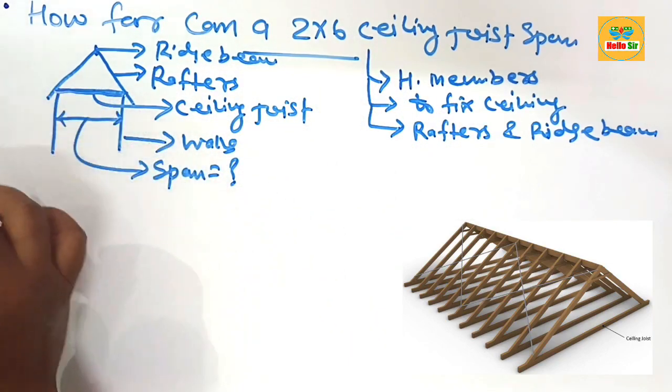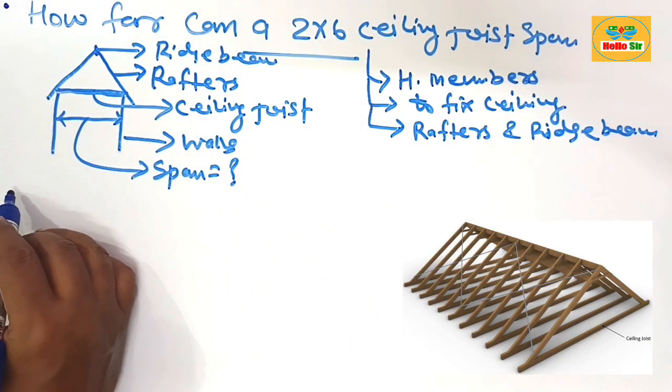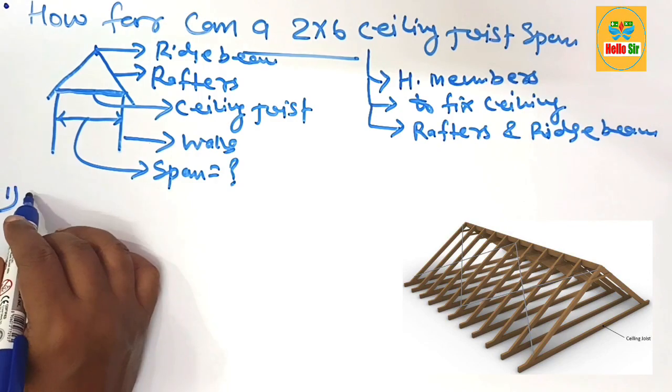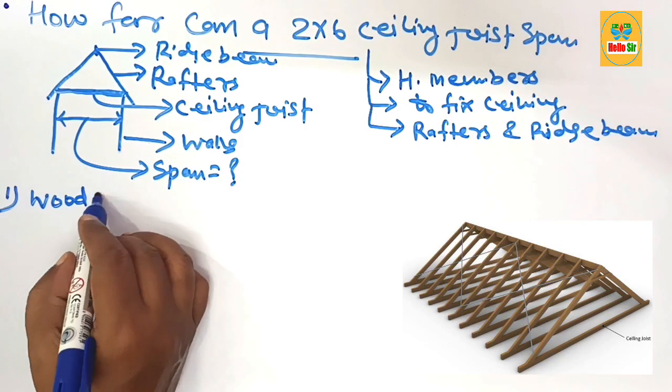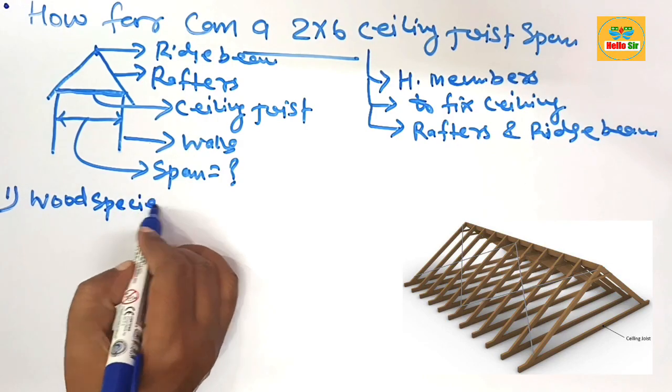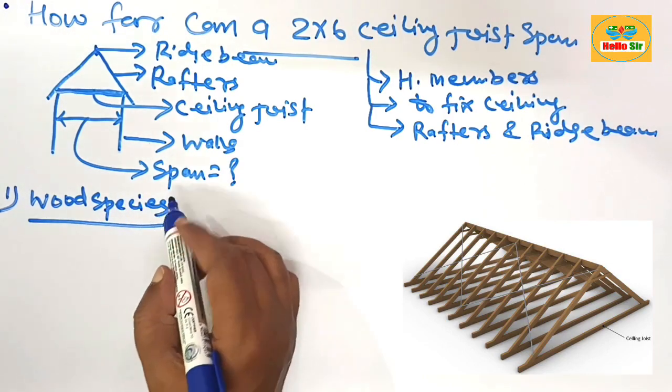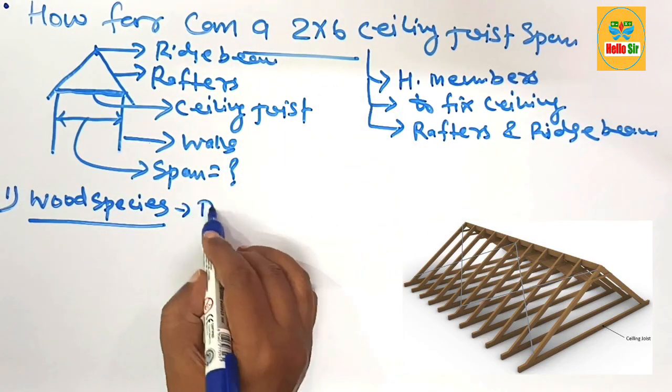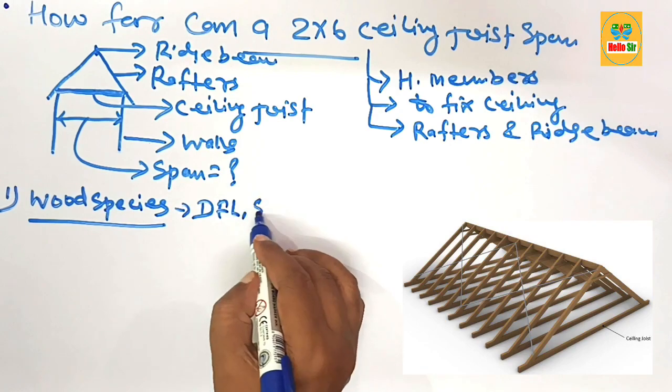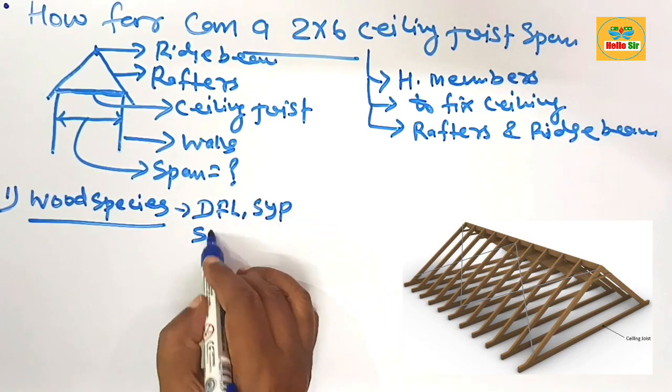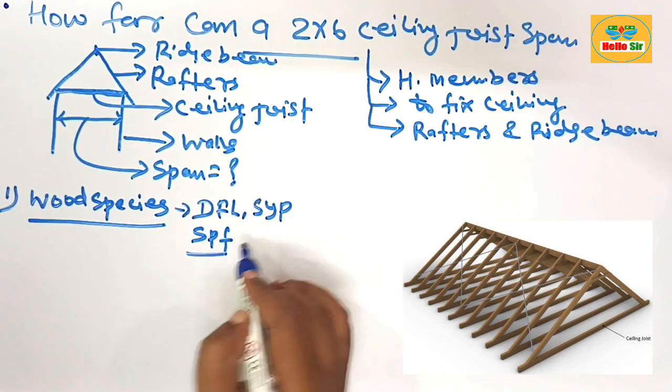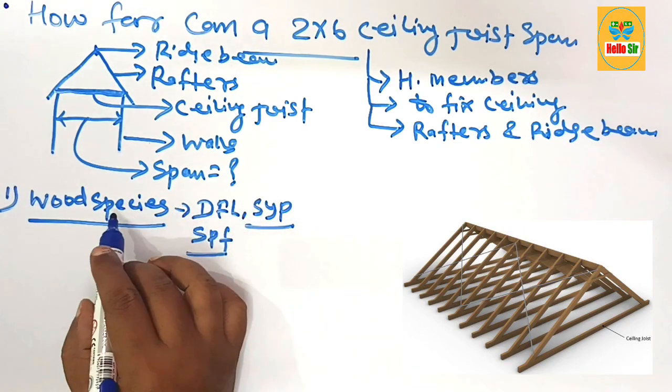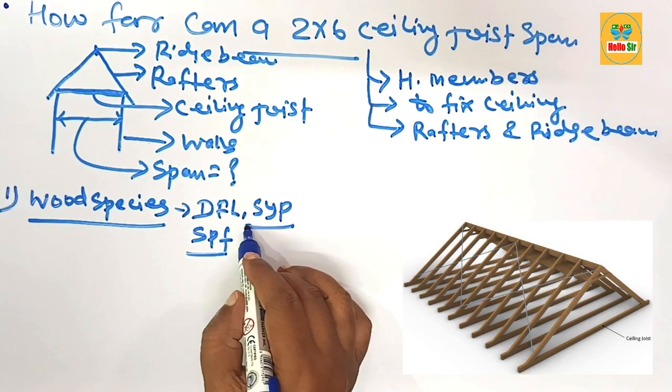This one is your ceiling joist. The span for ceiling joist depends on many factors. The first one is wood species. You know there are different kinds of wood that are used as dimensional lumber as ceiling joist, like DFL, SYP, and SPF. SPF, that is Southern Yellow Pine, is the strongest wood - it spans more distance compared to other wood.